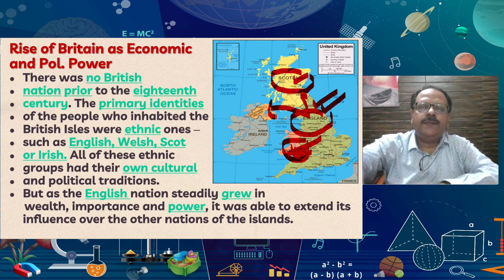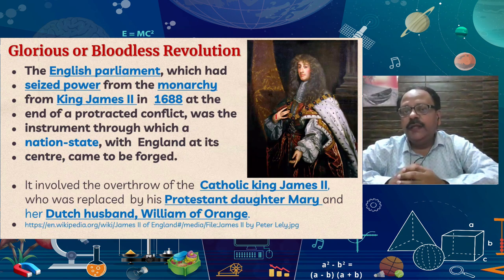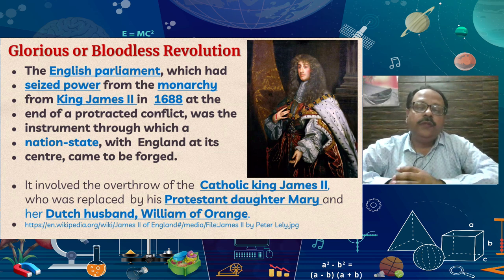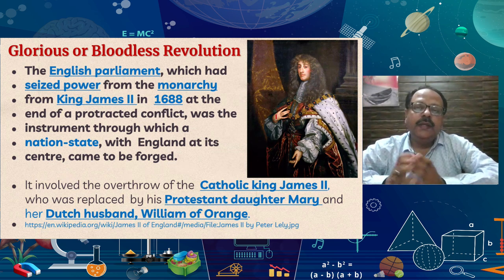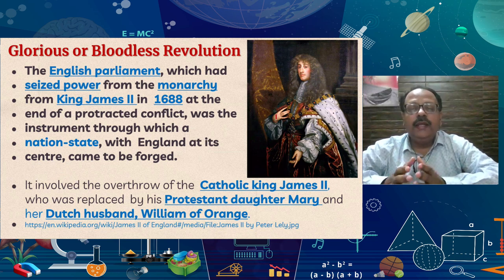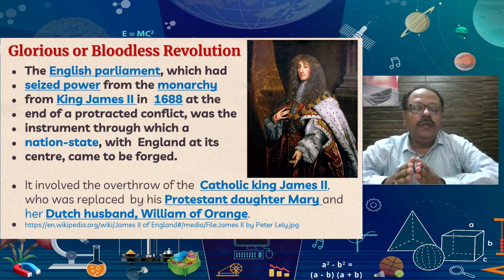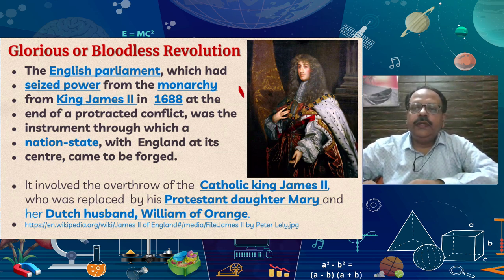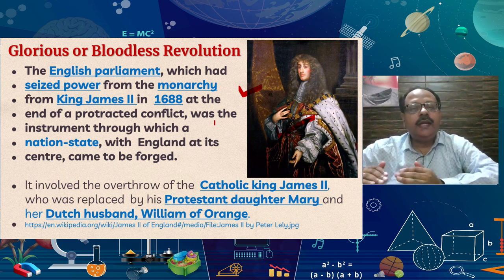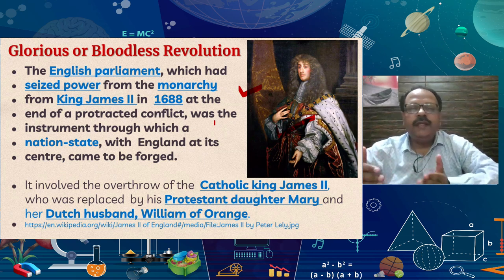A very important thing is the Glorious Revolution, also known as the Bloodless Revolution. It is called 'Shandar Kranti' or 'Rathin Kranti' in Hindi. It is called bloodless because the powers of the monarch — the king — were shifted towards the Parliament. All these things were done particularly in 1688. King James II was taking all the powers, and the Parliament shifted those powers. Now the Parliament started to rule on behalf of the king, as we see this system even today.